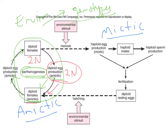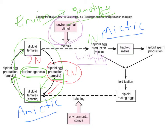When the environment changes — as conditions become colder toward the end of the season, when fall turns to winter — things become less predictable. Those environmental stimuli cause females to switch from producing eggs via mitosis to producing eggs via meiosis. Meiotically produced eggs are now haploid — 1N eggs.